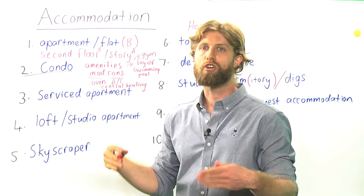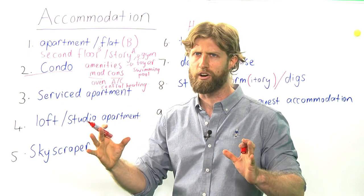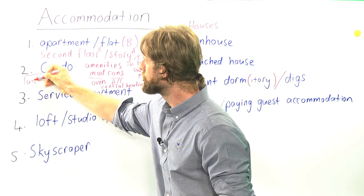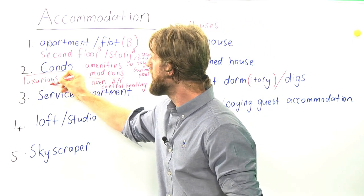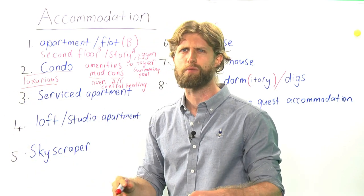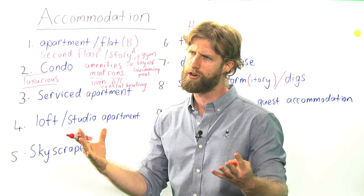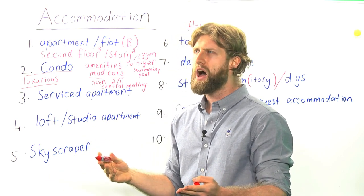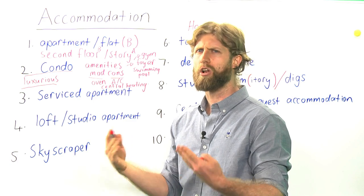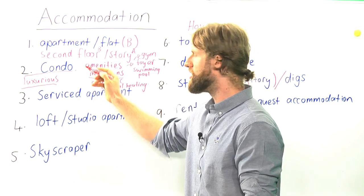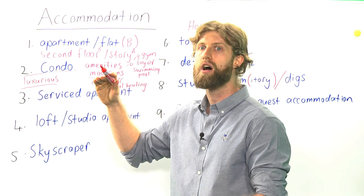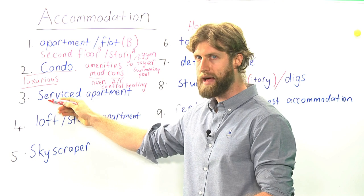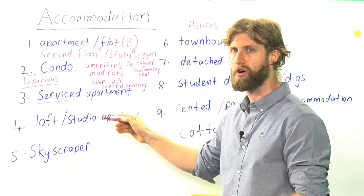Over to the next word: we have got a condo. A condo is a bigger, more luxurious building. Luxurious means it is more expensive and larger — you are paying more money for it. An example sentence would be: I am paying a lot of money by renting the condo on the top floor of the apartment building.